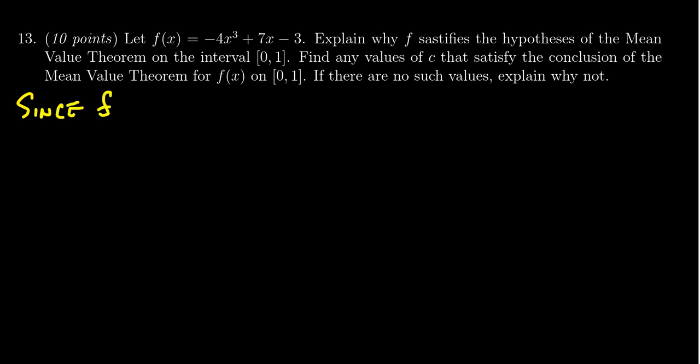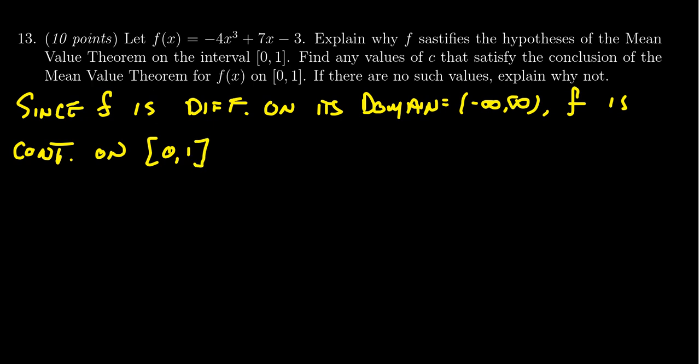Since f is differentiable on its domain, which is (-∞,∞), f is continuous on the interval [0,1] and differentiable on the open interval (0,1). If it's differentiable everywhere then it'll be differentiable on some smaller interval, and differentiability also implies continuity. So if it's differentiable everywhere it's actually continuous everywhere and therefore continuous on the closed interval [0,1].